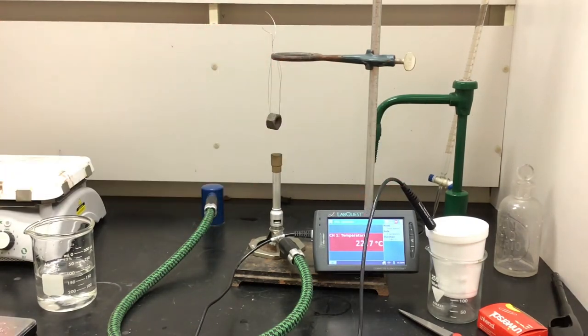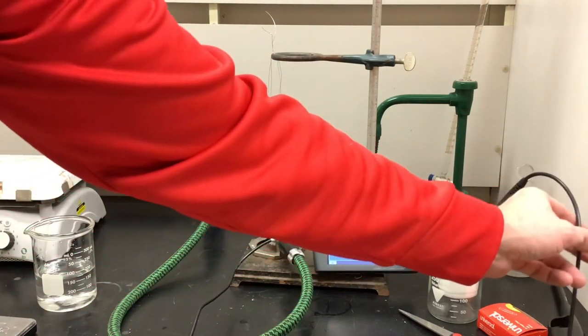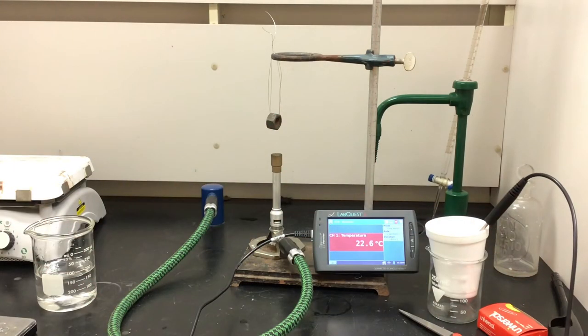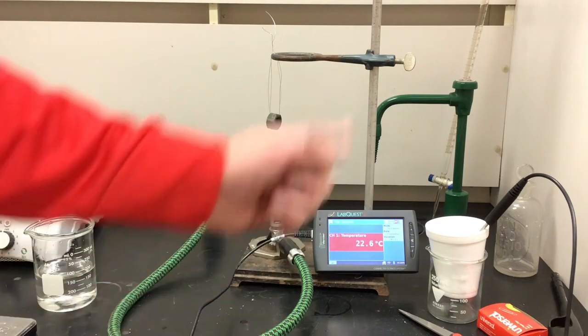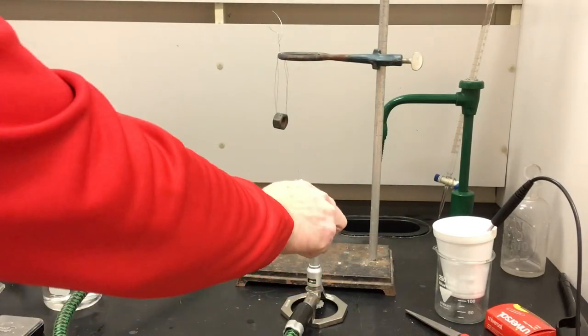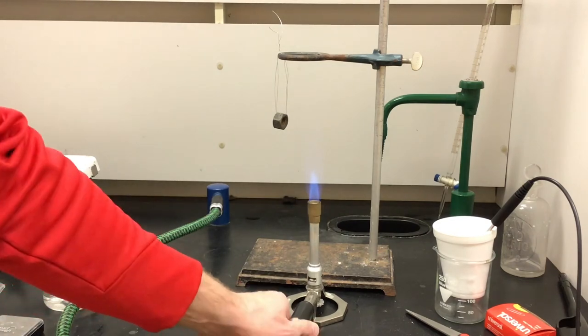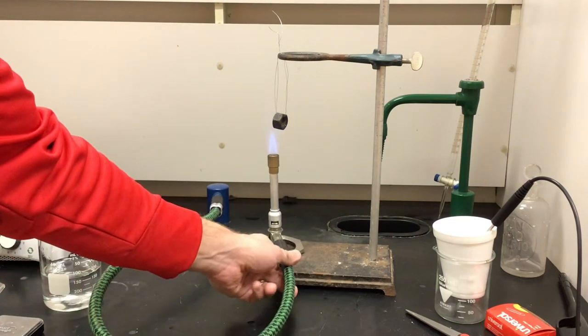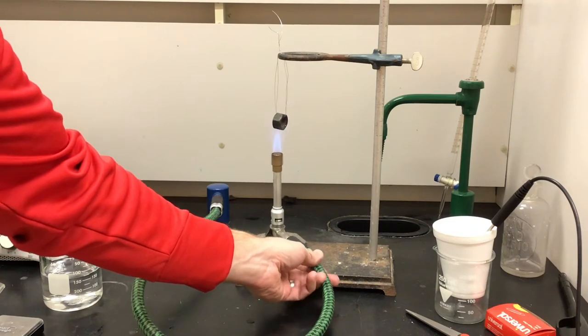As we continue to get the lab set, we know a couple things about the water. We know how much water: 200 grams, 200 milliliters. We know the initial temperature of the water, 22.6. We'll verify that prior to the addition of the bolt into it. We know the specific heat of water which is one calorie per gram degree Celsius.